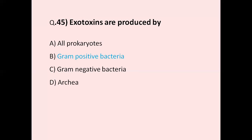Question number 45: Exotoxins are produced by — option A prokaryotes, option B gram-positive bacteria, option C gram-negative bacteria, option D Archaea. The correct answer is gram-positive bacteria. Exotoxins are produced by gram-positive bacteria only.